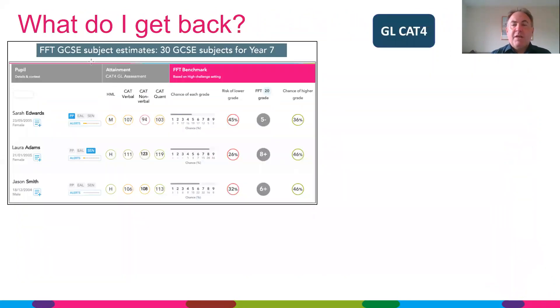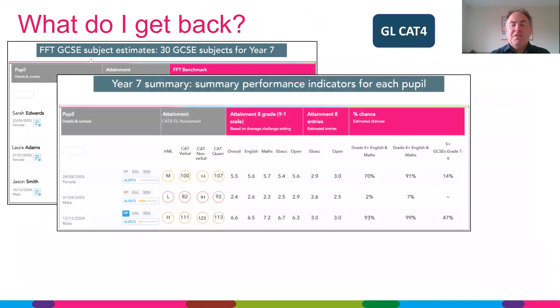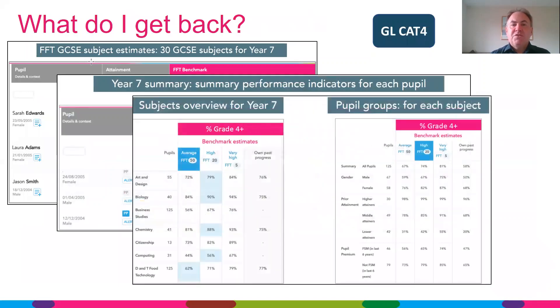You'll get back 30 separate subject-specific estimates for every single student. You'll also get some summary indicators for every Year 7 student, as well as some subject and pupil group information.